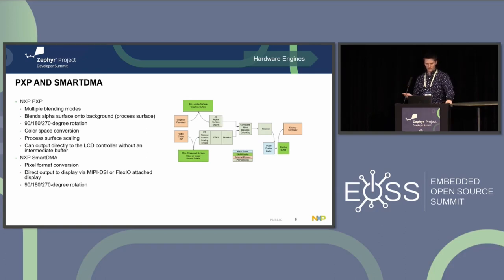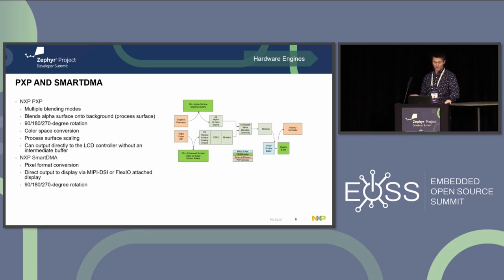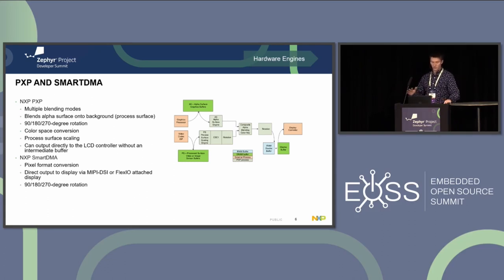The SmartDMA is the second NXP peripheral. It's a simpler peripheral but has some of the same features — particularly pixel format conversion and rotation — and the key feature of direct output to display. I want to highlight both of these peripherals because they have the ability to pipe directly to the display. For anyone familiar with Zephyr's display API right now, there's not really a way to write directly to hardware with something like rotation in the mix or pixel format conversion.